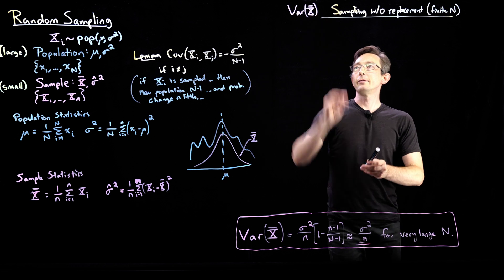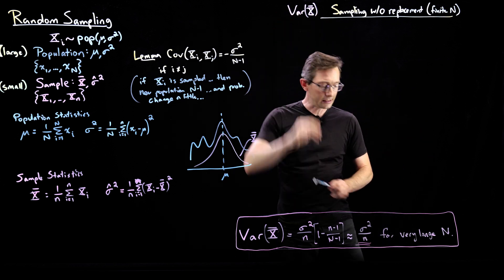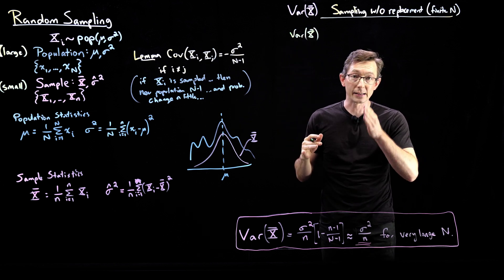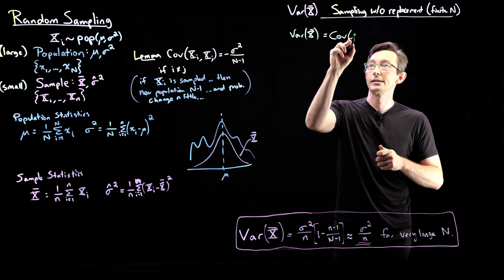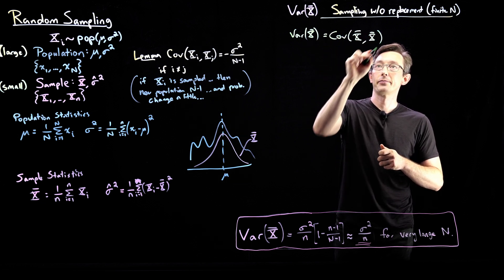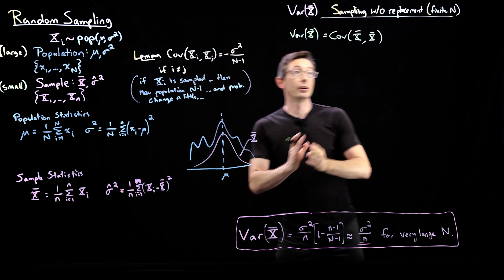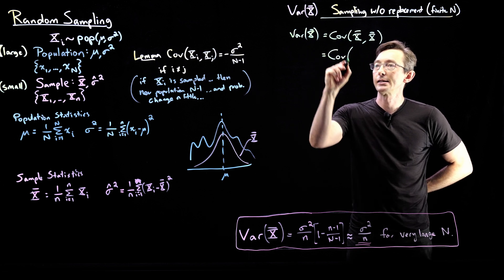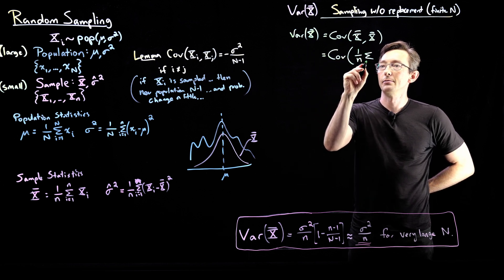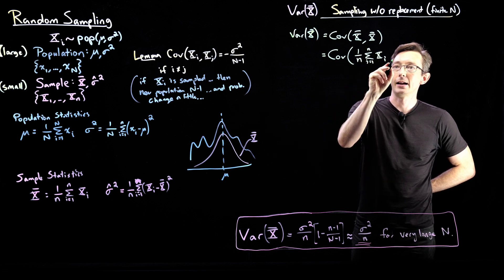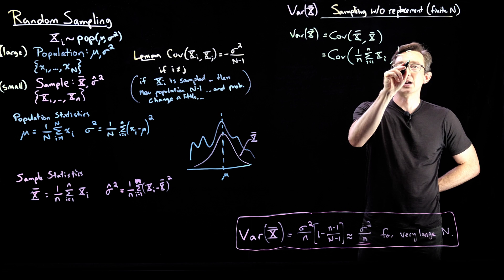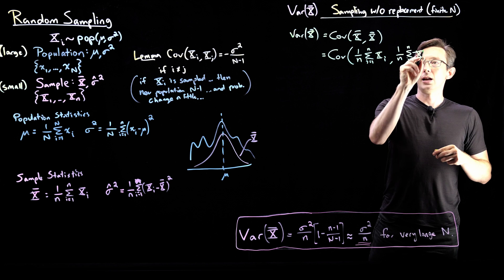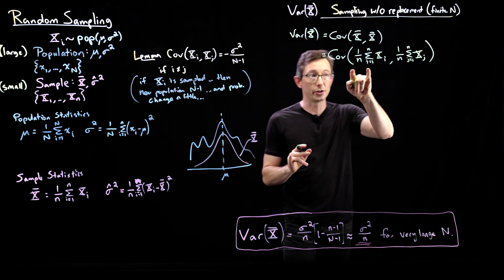Let's get into the proof. The variance of X̄ is technically the covariance of X̄ with itself. This equals the covariance of the sample mean with itself, and I'm going to plug in the sum into both terms of the covariance. So this equals the covariance of (1/n · Σᵢ₌₁ⁿ Xᵢ) with (1/n · Σⱼ₌₁ⁿ Xⱼ). This is absolutely true — there are no approximations being made. If all of these X's are independent, i.e., if N is really large, then this simplifies a lot, but we're going to assume a small covariance here.